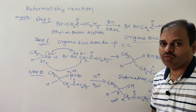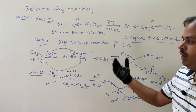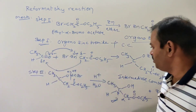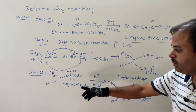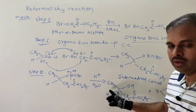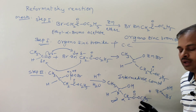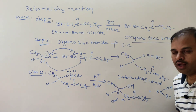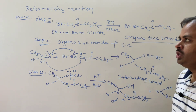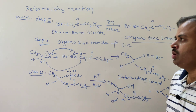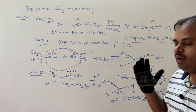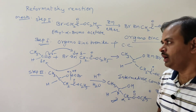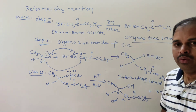In summary, this is the Reformatsky reaction. For acetone, the only difference is that hydrogen is replaced with a methyl group, giving ethyl beta-hydroxy-beta-methylbutyrate. The Reformatsky reaction is shown by both aldehydes and ketones: aldehyde or ketone reacts with alpha-haloester in the presence of zinc and ether to give beta-hydroxyester. This is a very important name reaction.